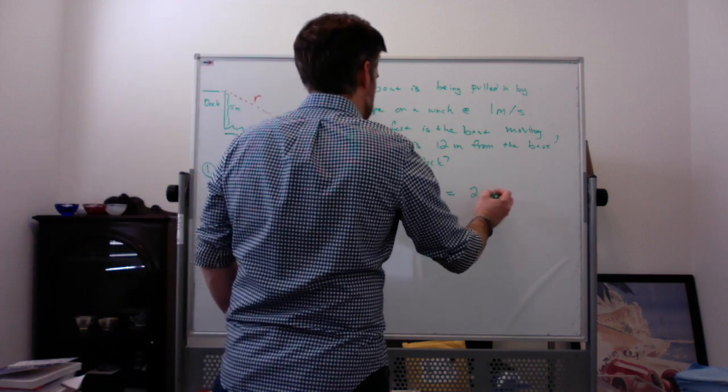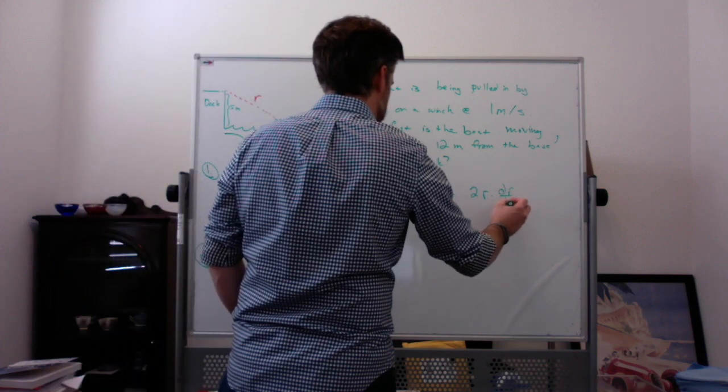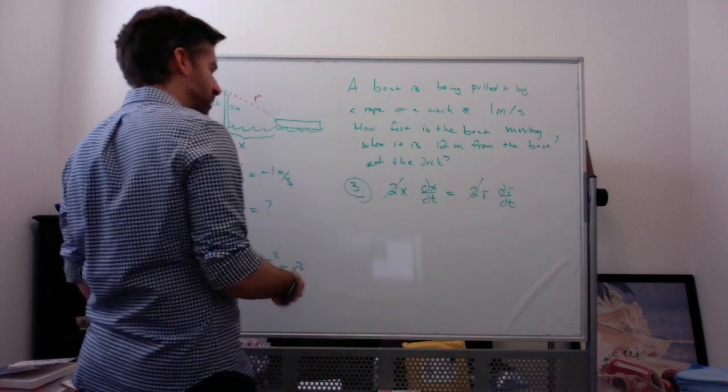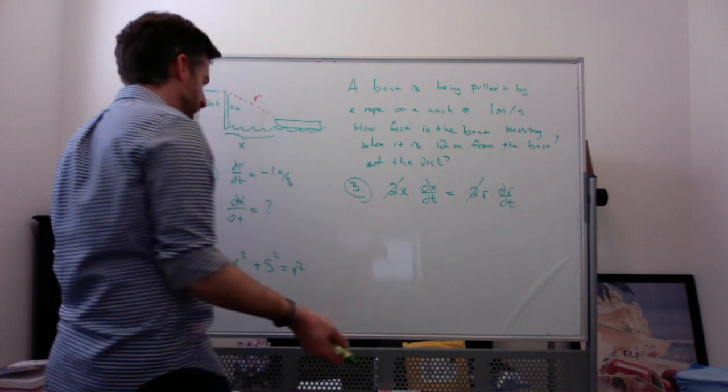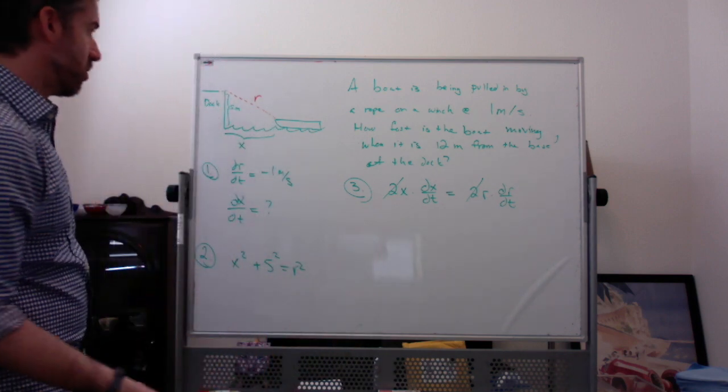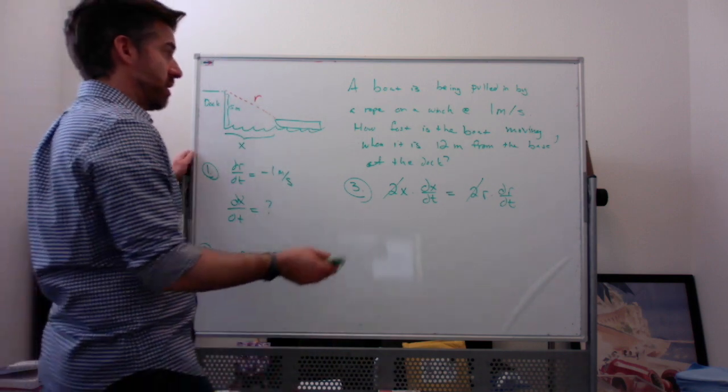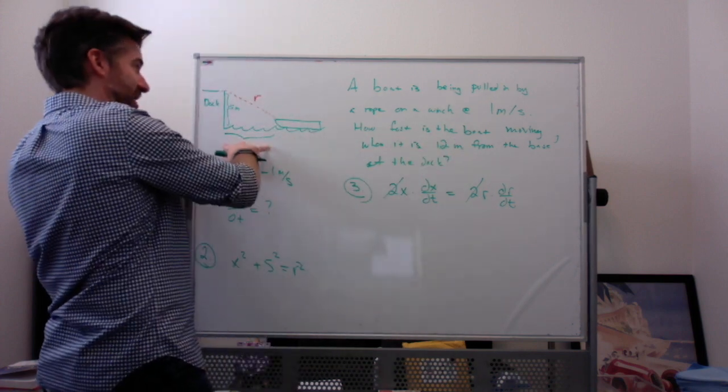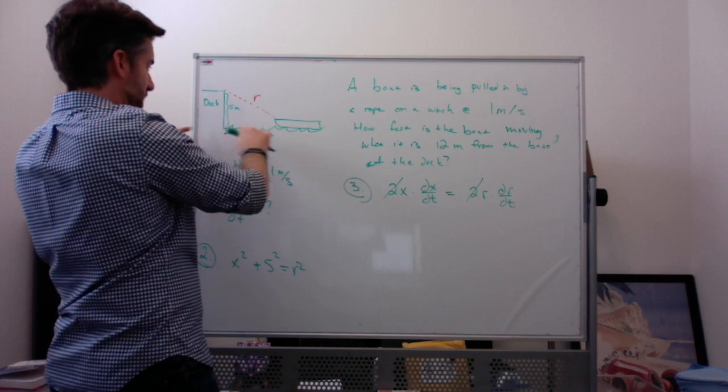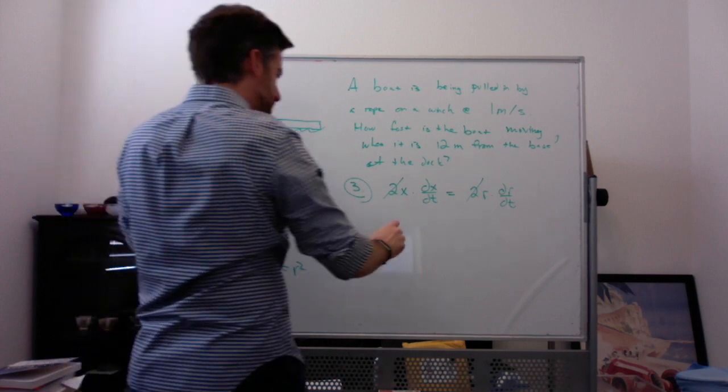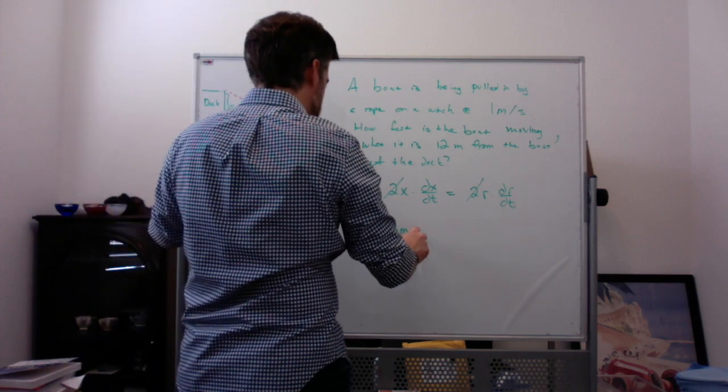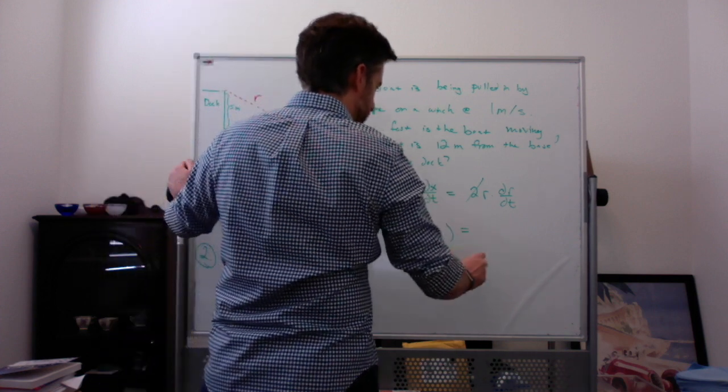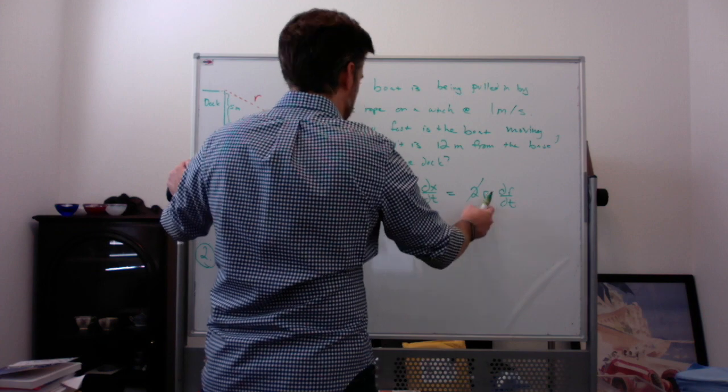We do know X, right? So they say how fast is the boat moving when it is 12 meters from the base of the dock. So that's when X is 12. Not when R is 12. When it's 12 meters from the base, we're saying this distance is 12. So we have 12 meters times dx/dt, which is what we're trying to find, equal to R times dr/dt.